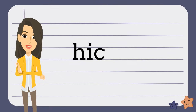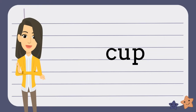The first part is H-I-C. We know that if a syllable ends in a consonant, the vowel is short, so we would pronounce this HIC. The second part is C-U-P. We know that if a syllable ends with a consonant, the vowel is short, so we would pronounce this CUP. When we put it together, we get the word HICCUP.